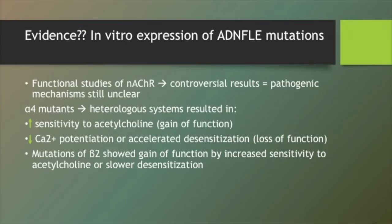There have been many studies on autosomal dominant nocturnal frontal lobe epilepsy to investigate the exact pathophysiology of this disease. Functional studies have produced controversial results which still makes it unclear. Expression of alpha 4 mutants in heterologous systems resulted in various effects consistent with either a gain or loss of function — increased sensitivity to acetylcholine as a gain of function, and decreased calcium potentiation or accelerated desensitization as a loss of function.